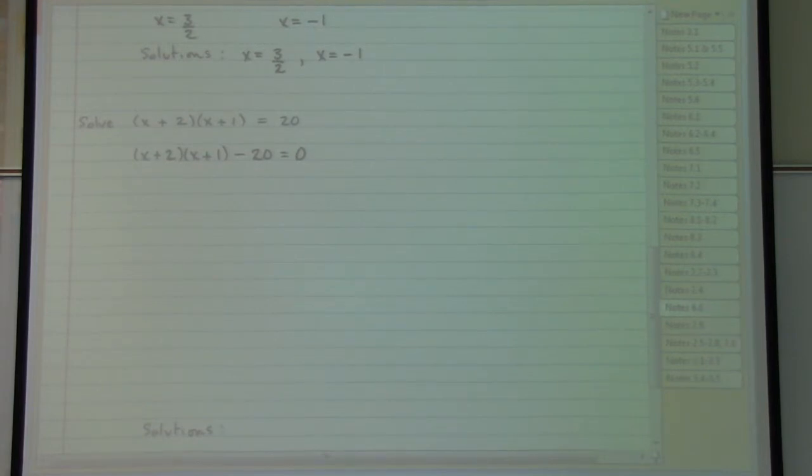Well, that's not a usual factoring problem. Maybe it would be helpful to do the multiplication x plus two times x plus one. So using FOIL and then combining like terms.